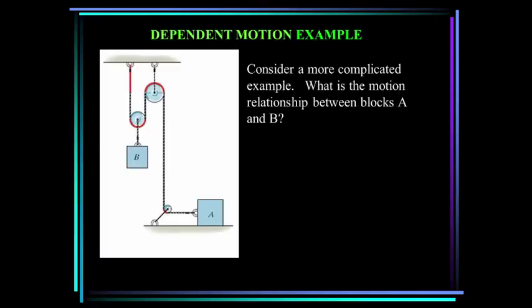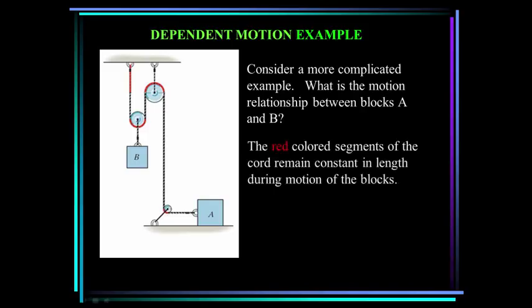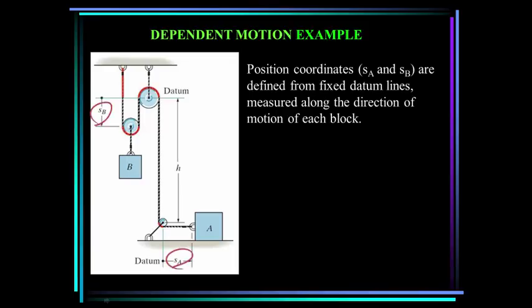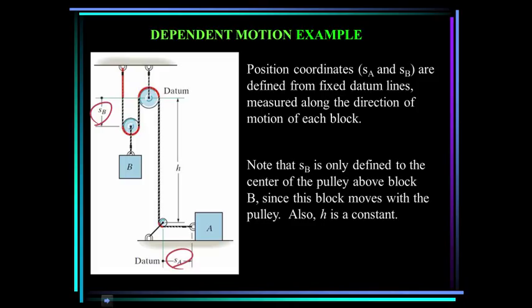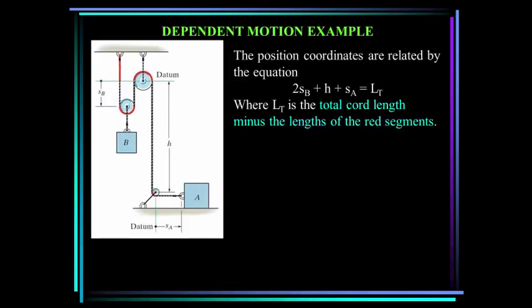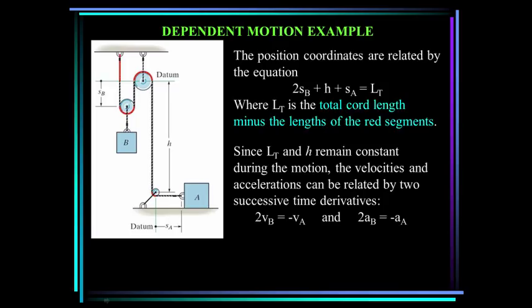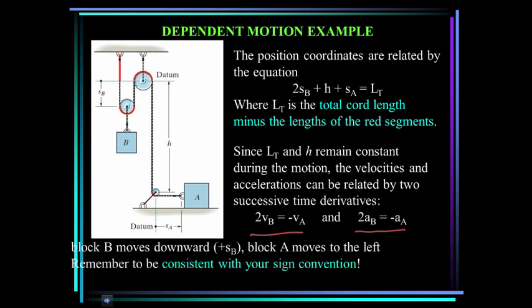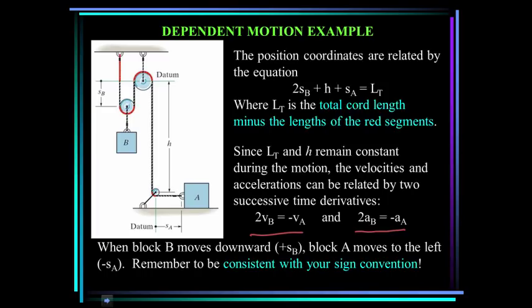Consider a more complicated example — Slide 5. What is the motion relationship between blocks A and B? The red colored segments of the cord remain constant in length during motion of the blocks. Position coordinates SA and SB are defined from fixed datum lines measured along the direction of motion of each block. Note that SB is only defined to the center of the pulley above block B, since this block moves with the pulley. Also, H is a constant. The position coordinates are related by the equation 2SB plus H plus SA equals LT, where LT is the total cord length minus the lengths of the red segments. Since LT and H remain constant, the velocities and accelerations can be related by two successive time derivatives. When block B moves downward in the positive direction, block A moves to the left in the negative direction. Please remember to be consistent with your sign convention.